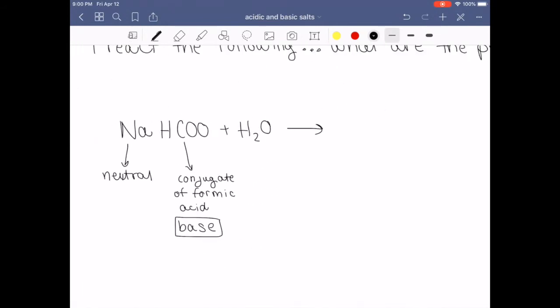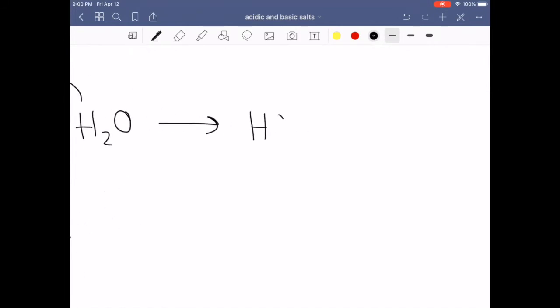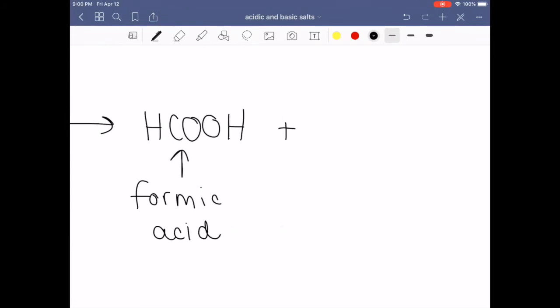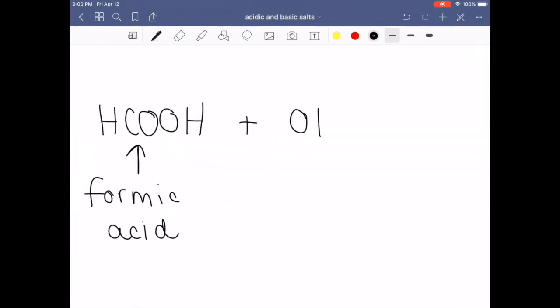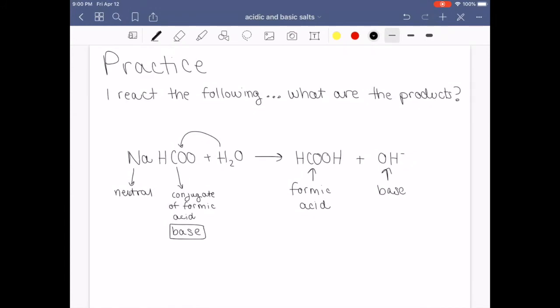Great. So now that we got that out of the way, we know that bases accept protons. So what's going to happen is this base is going to steal a hydrogen from water, creating HCOOH, which is formic acid, and hydroxide, which is a base, a strong base. All right. So that those are the products of this reaction formic acid and hydroxide.